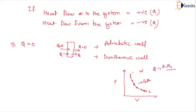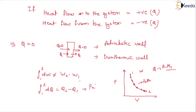Just as the integration of work done between states 1 and 2 cannot be expressed as W2 minus W1 because it depends on the path, similarly the change in heat transfer cannot be expressed as Q2 minus Q1 — it is a path function. So similar to work done, heat transfer between the system and surrounding is defined as a path function. This is all about heat transfer and the modes of heat transfer. Thank you so much.